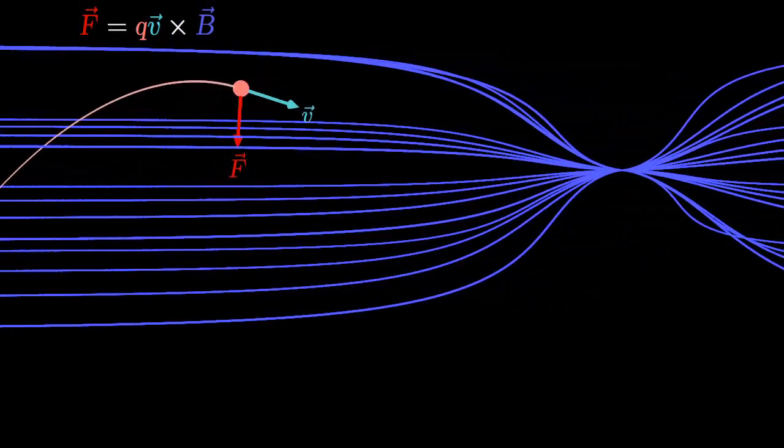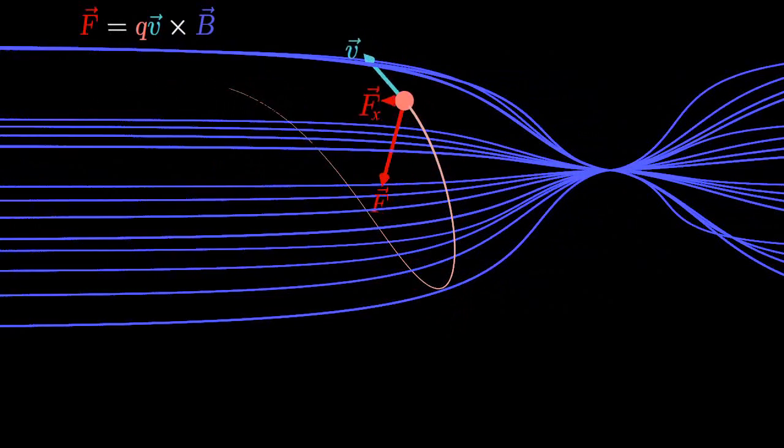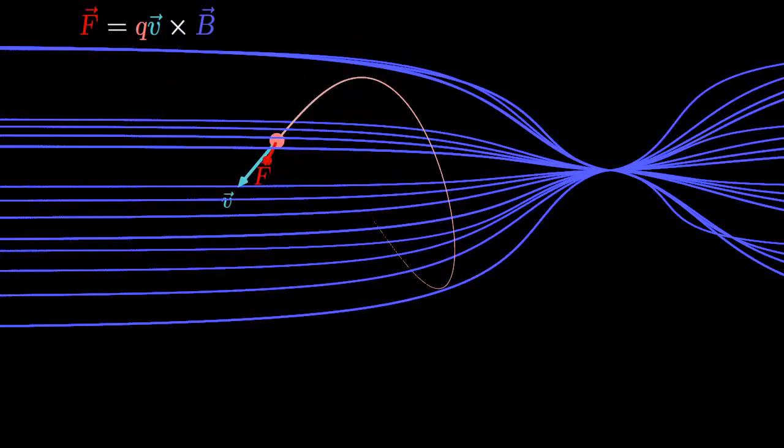Second, in a region where magnetic field lines are converging, there will be a component of magnetic force away from that region. This produces an effective magnetic mirror, which sends the charges spiraling back from whence they came.